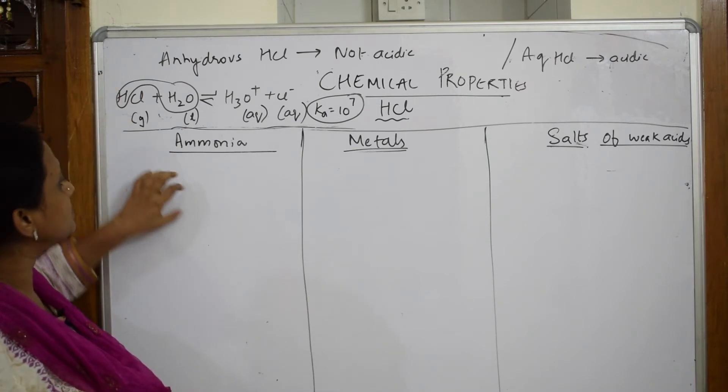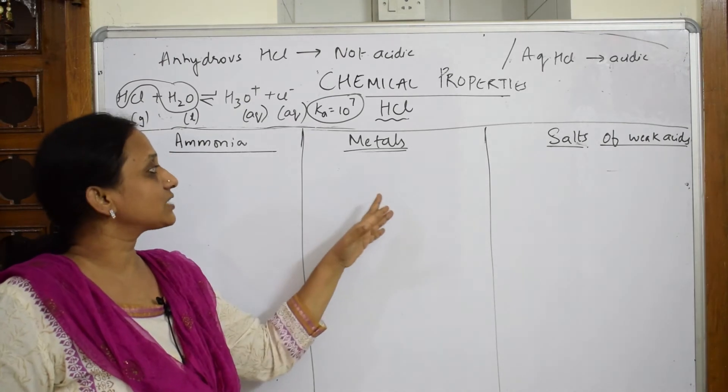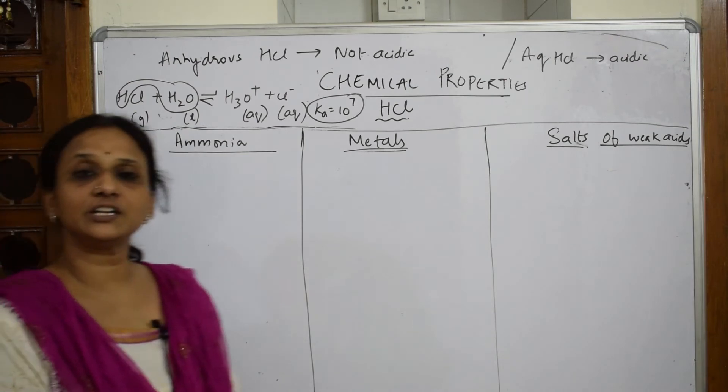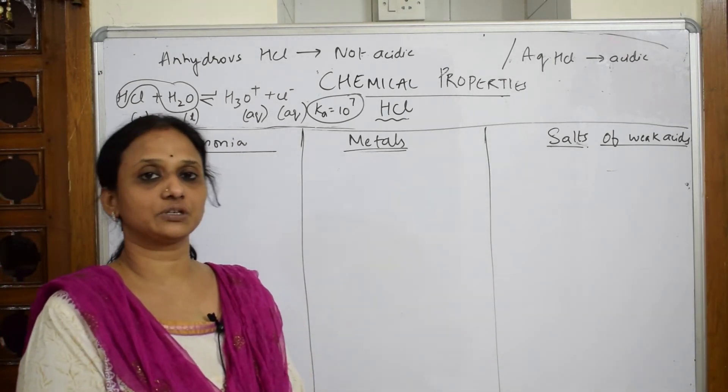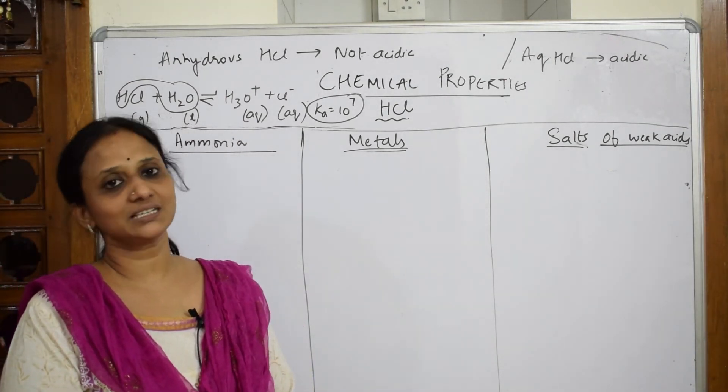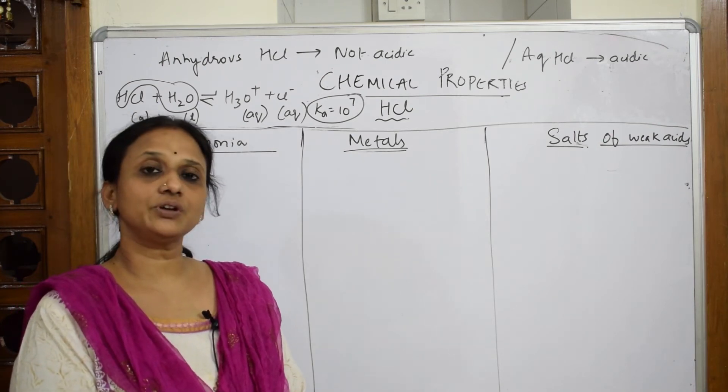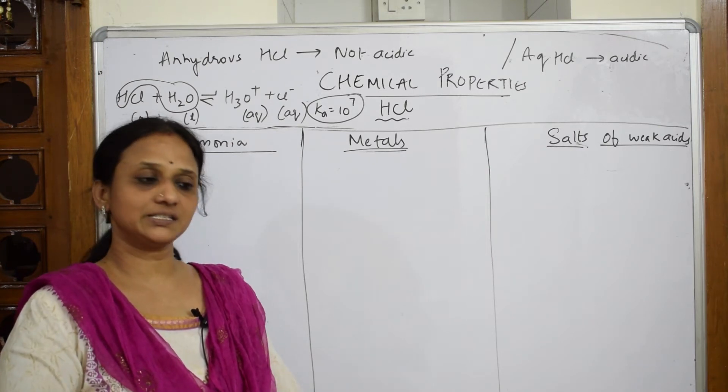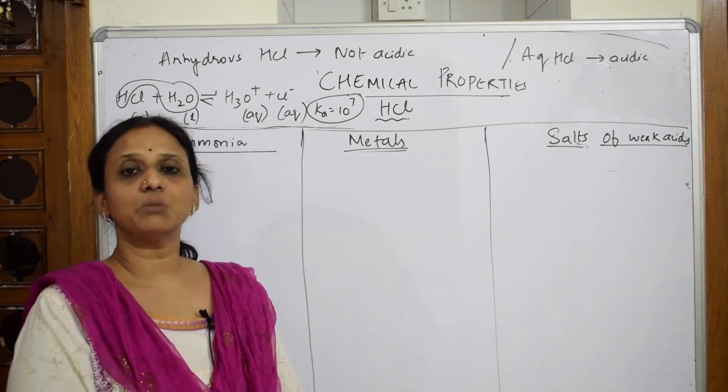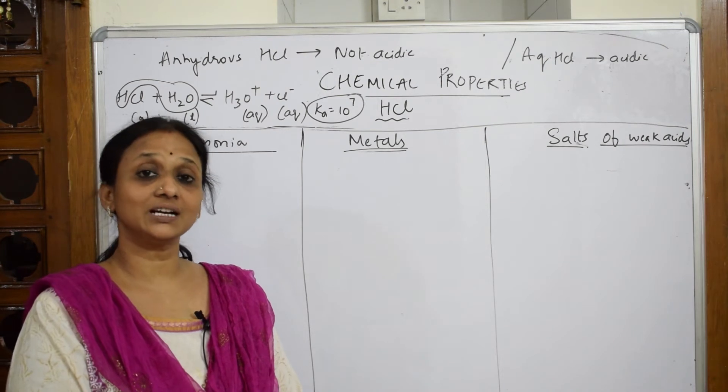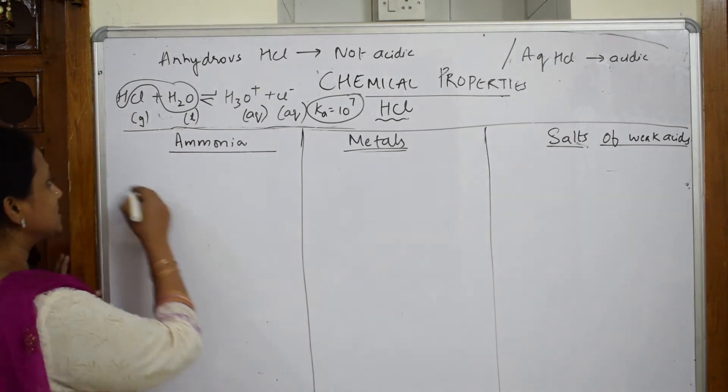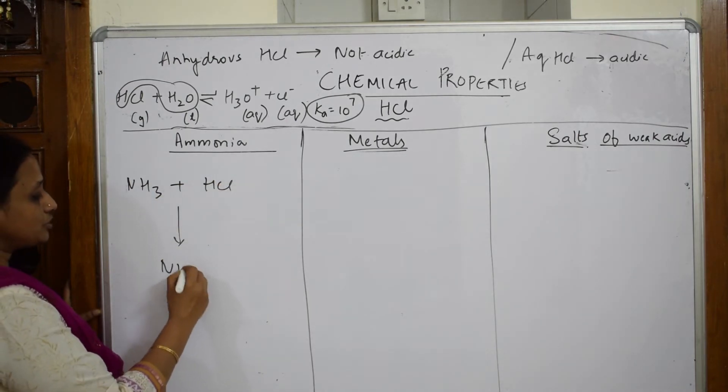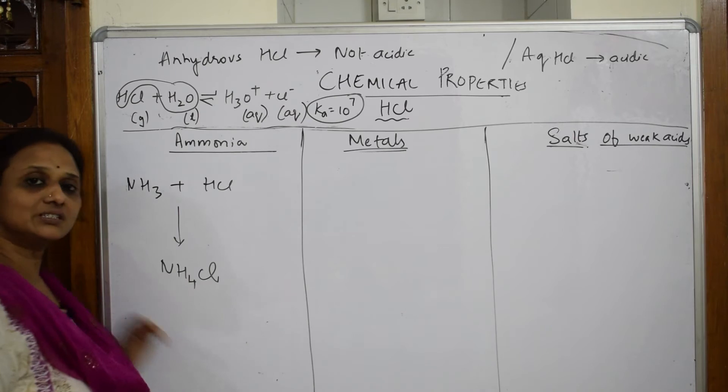Let us see based on this concept how it reacts with ammonia, metals, and salts of weak acid. When I speak about ammonia in your lab, the confirmatory test is Nessler's reagent. You would have taken the test tube containing ammonia and dipped a glass rod in HCl and introduced it in the mouth of the test tube. What did you observe? You got dense white fumes of ammonium chloride. That is the reaction when ammonia reacts with HCl.